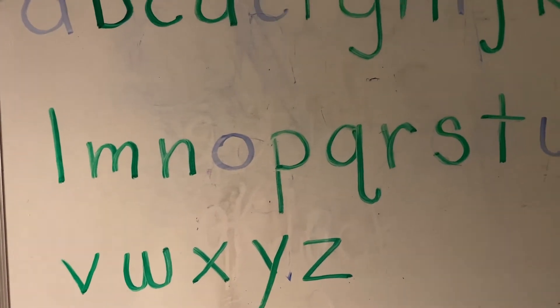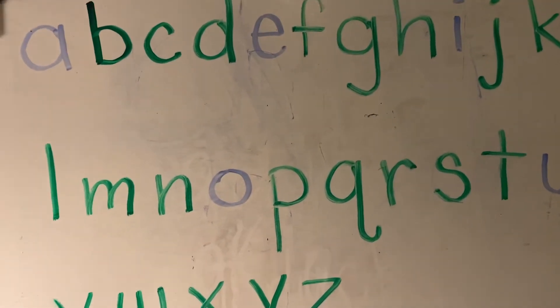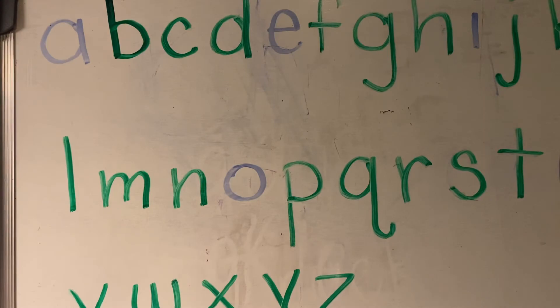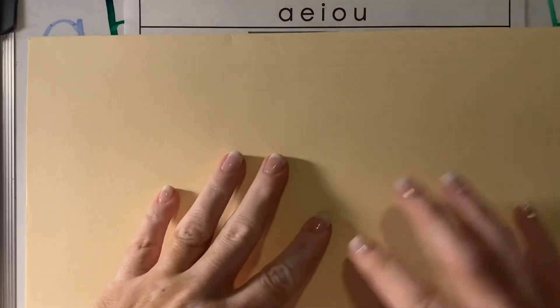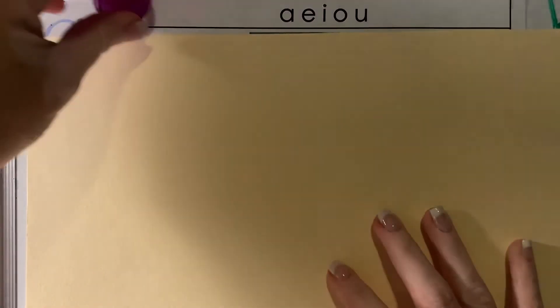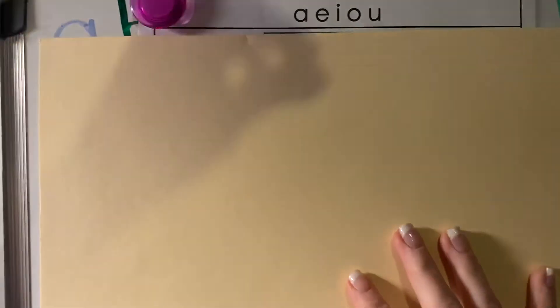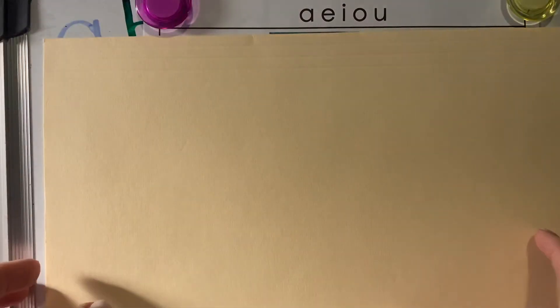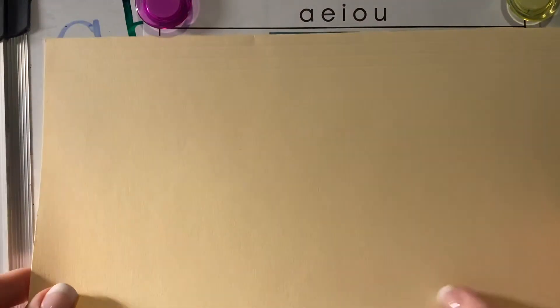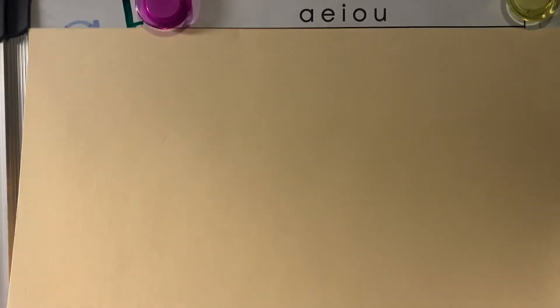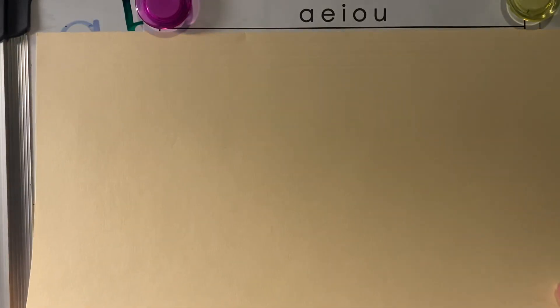Now we're going to focus just on our vowel sounds. I'm going to pull this onto the screen so you guys can see this. It shows our vowels right there separately — A, E, I, O, and U. These letters have two sounds: they have a short sound and they have a long sound.